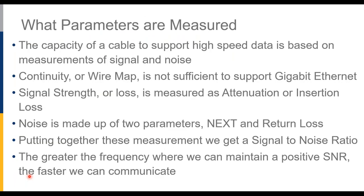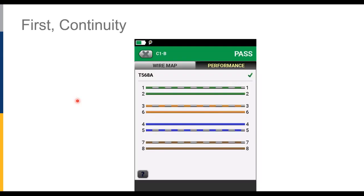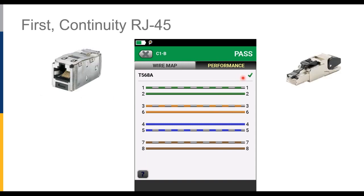What are we going to test? Continuity is not enough to ensure gigabit support — we need to measure signal strength, compare it to noise parameters, and come up with a signal-to-noise ratio. Any cable tester will give you a well-laid-out wire map of all conductors from one side to another, with a pass to indicate things are good. This works from jack to jack or plug to plug.